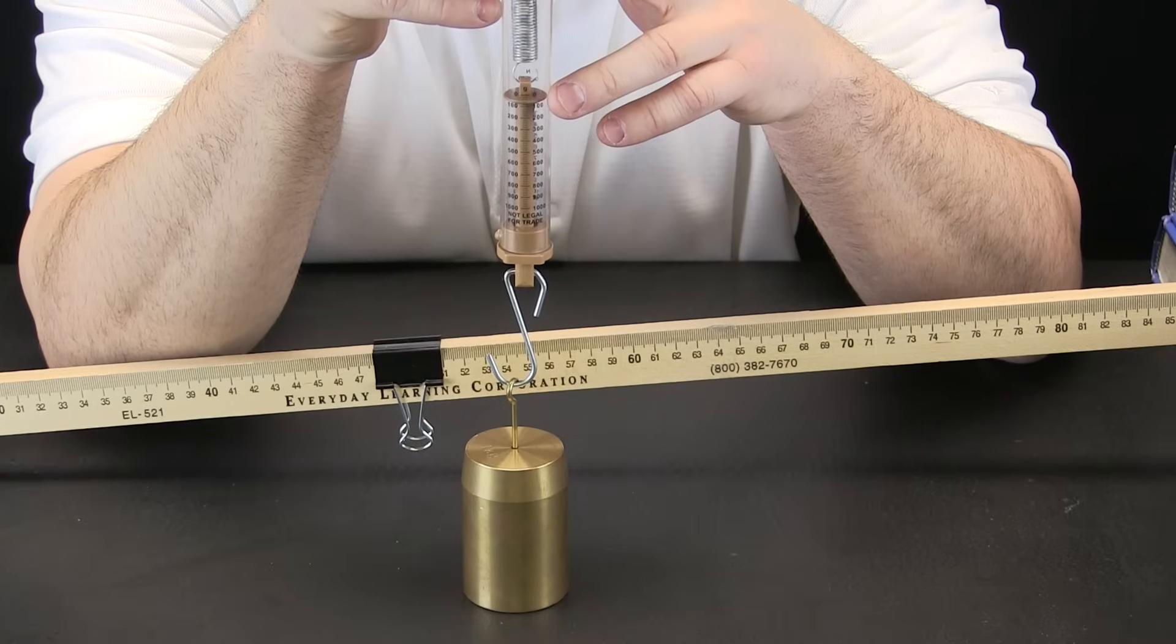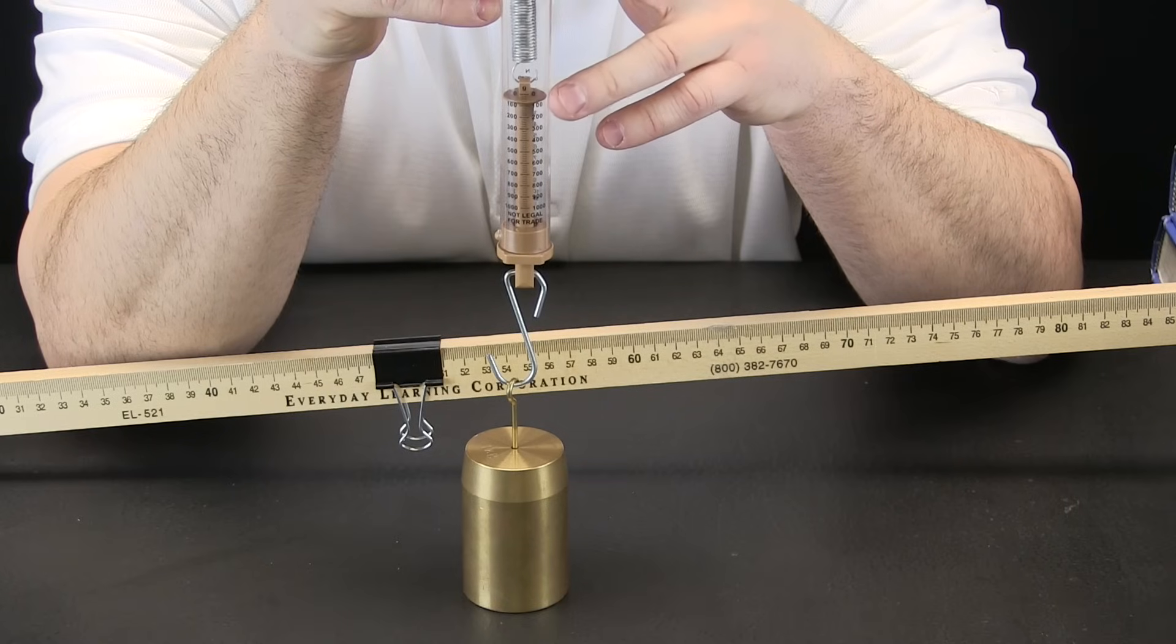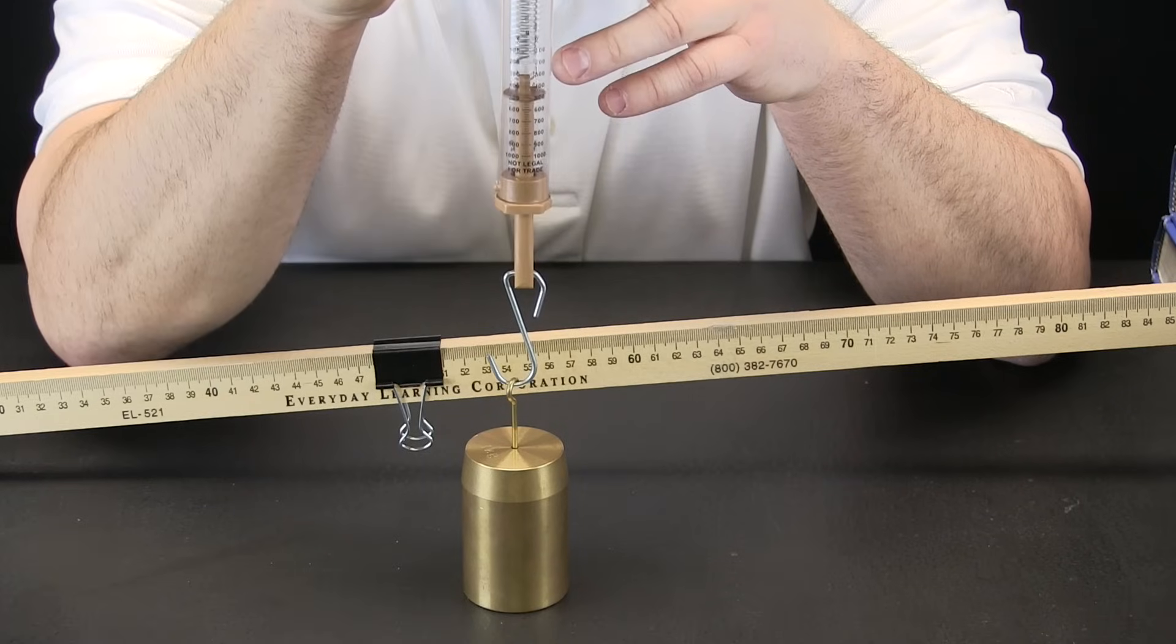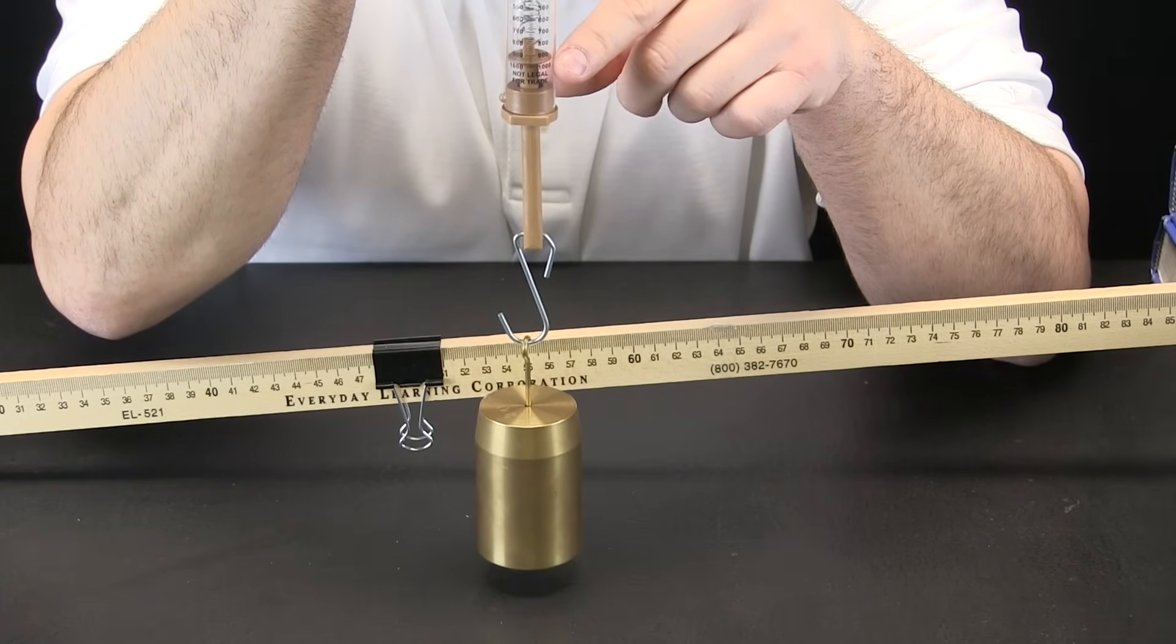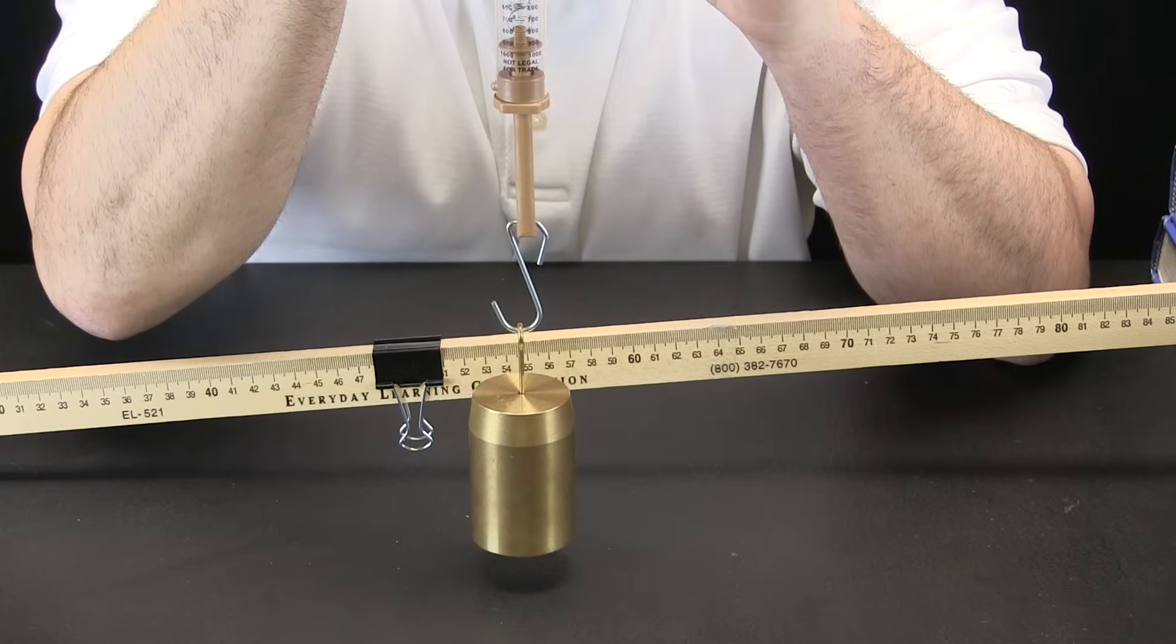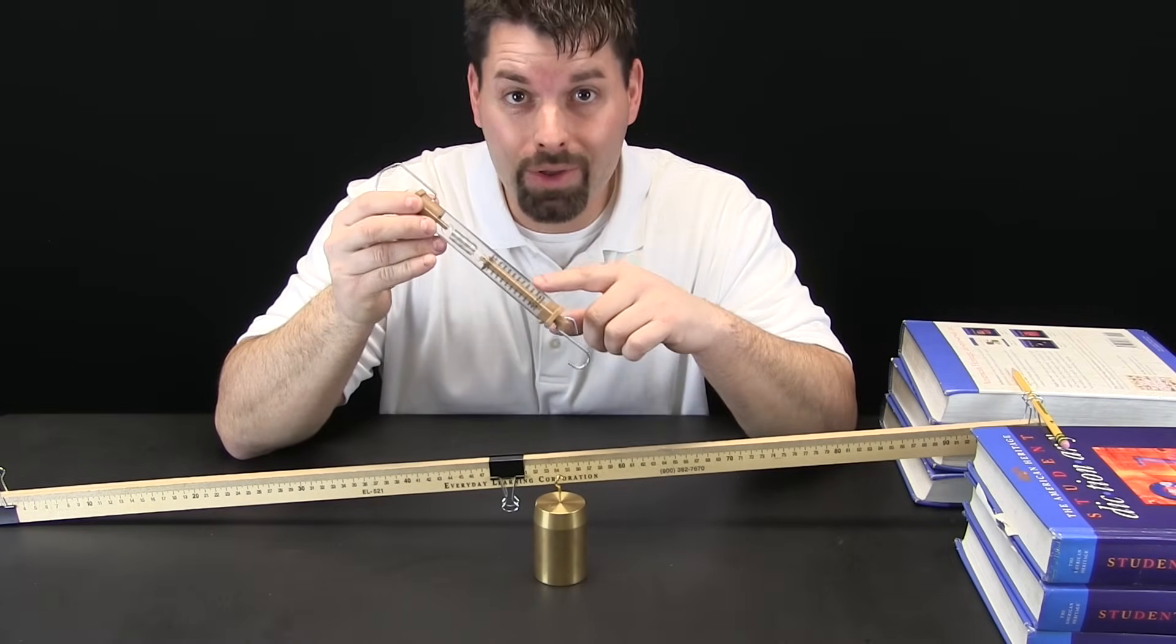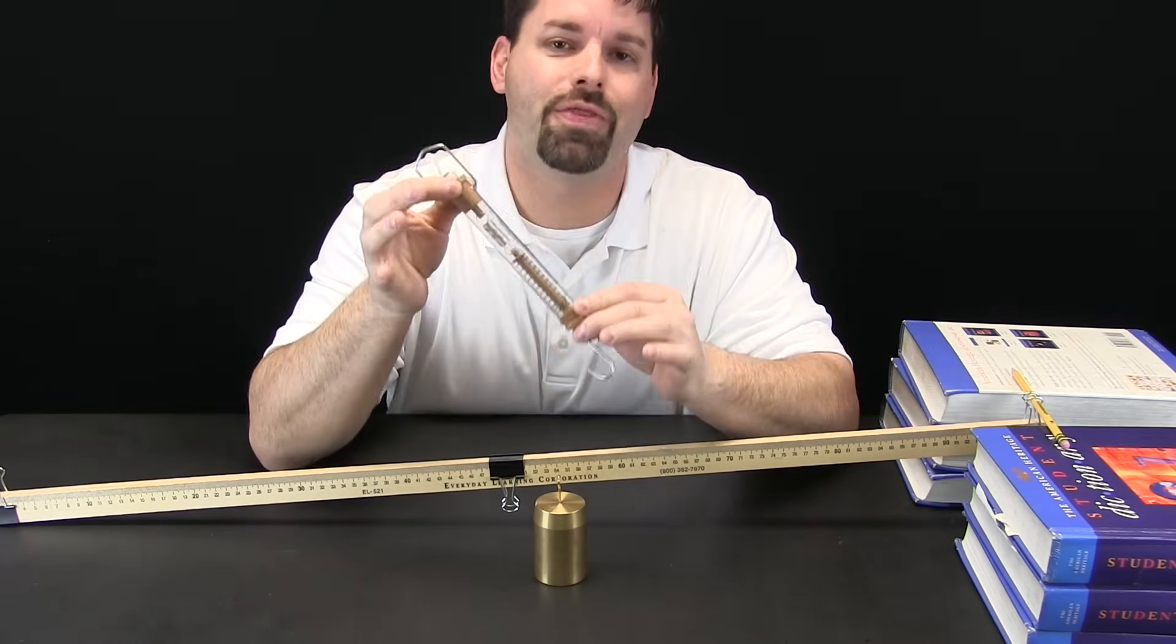So I am just about ready to lift our weight. Keep your eye right here and watch what happens on our spring scale. Watch it measure the weight. Here we go. Now I lift up. You see the spring scale stretch, and it should be right on a thousand grams. So this spring scale showed that this thousand gram weight actually did measure a thousand grams.